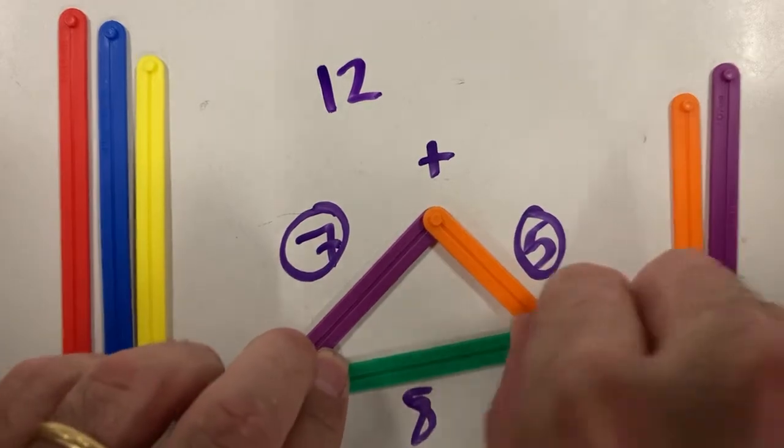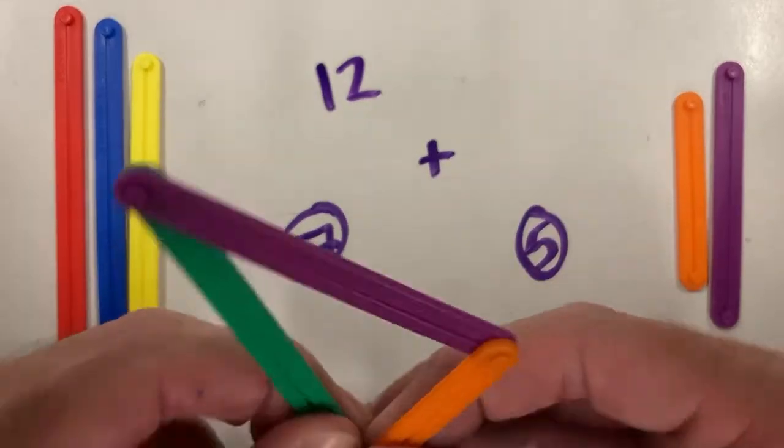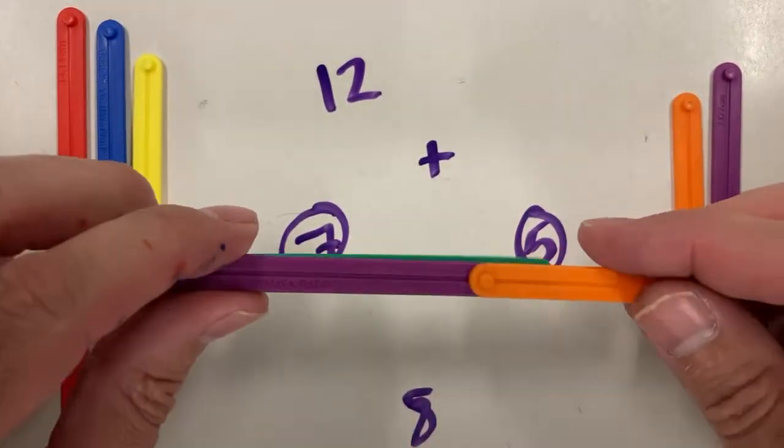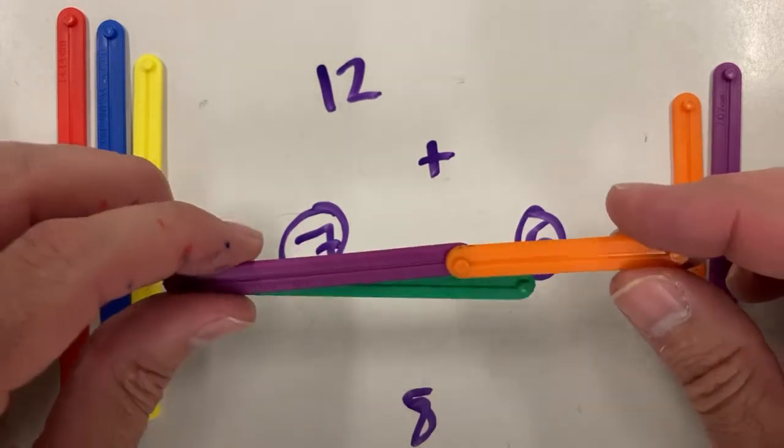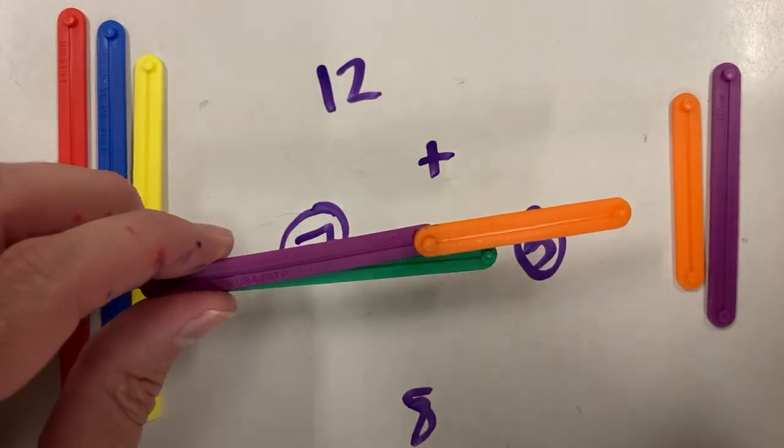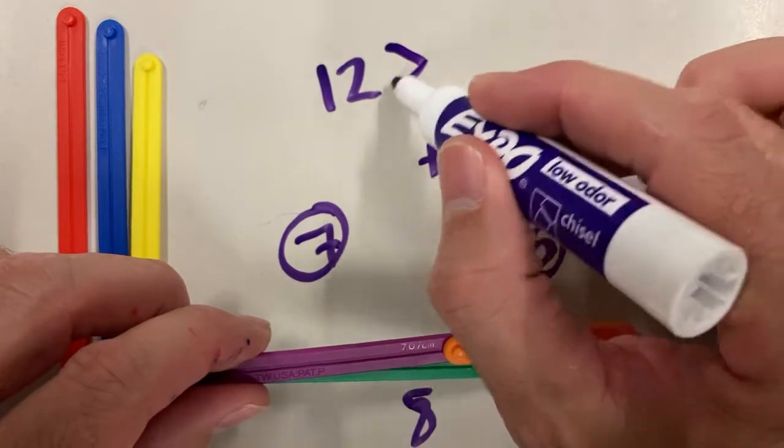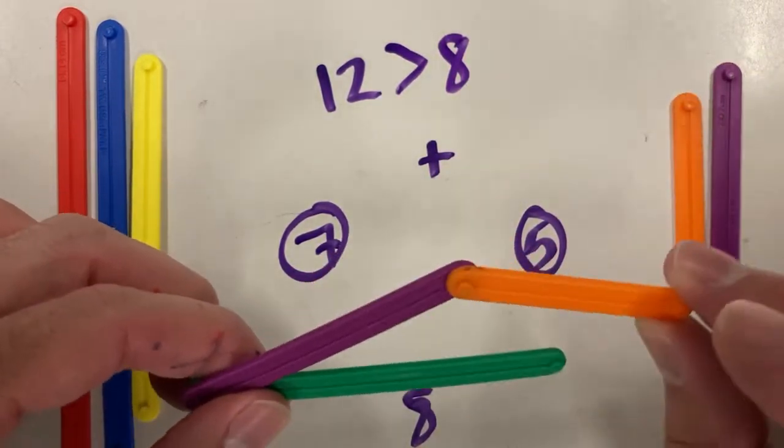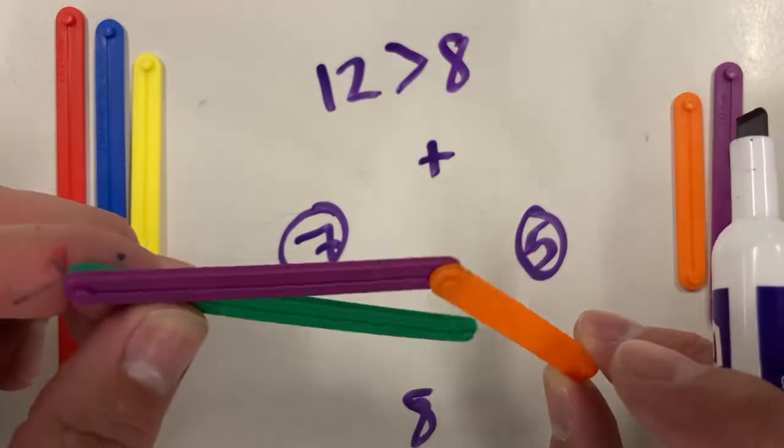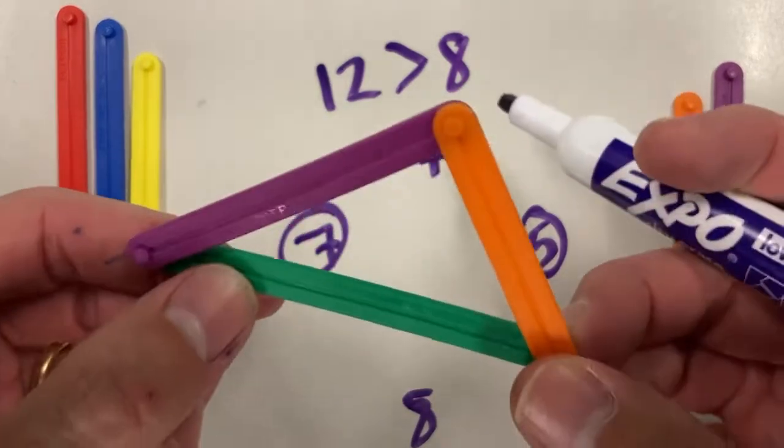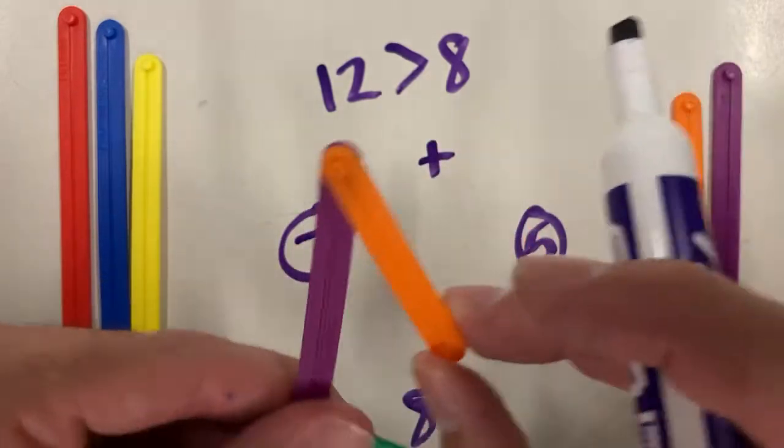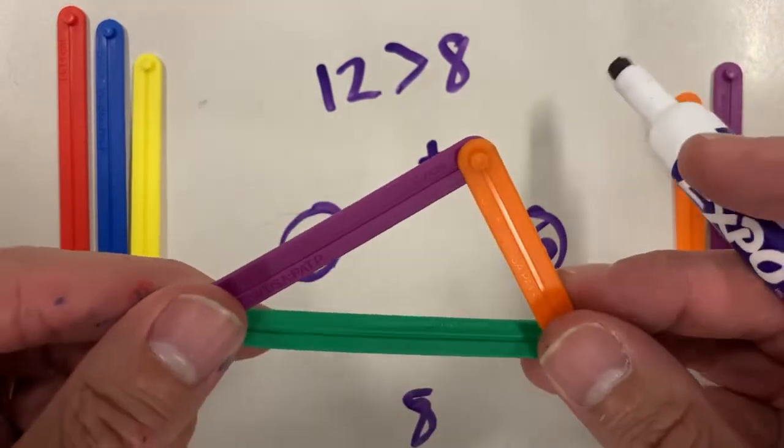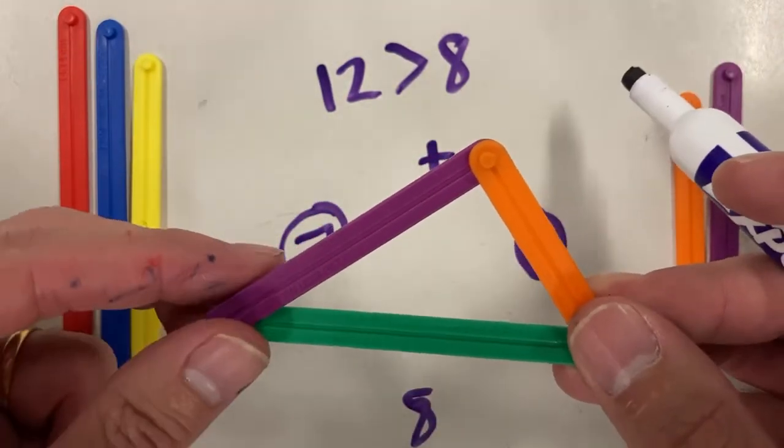And so basically, if we put those together, 7 and 5 is going to be 12 long. And we're going to compare that to 8. As long as 12 is longer than the 8, then it's going to bow up, and it will create angles. And doing so will create a triangle.